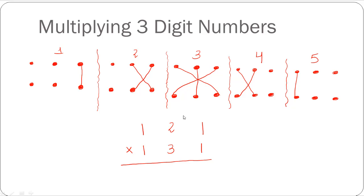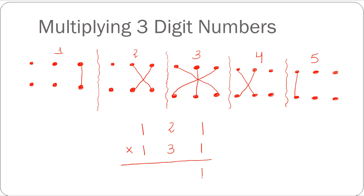Let's apply these steps to the multiplication of 121 times 131. The first step is multiplying one with one and you get one. The second step is multiplying one with two and three with one and adding the products, so two plus three is five. The third step is multiplying one with one, one with one, and two with three, and adding the products, so 1 plus 1 plus 6 gives me 8.